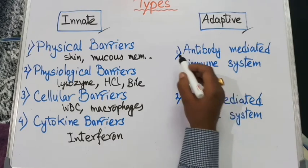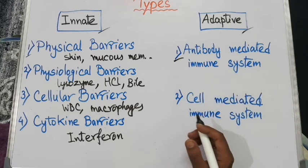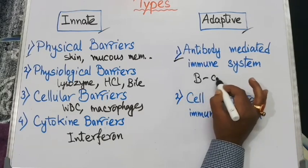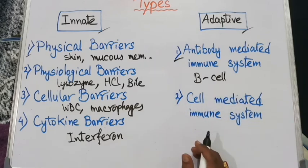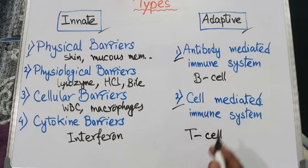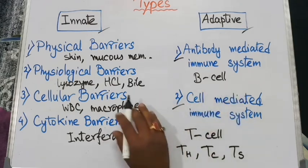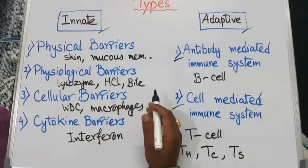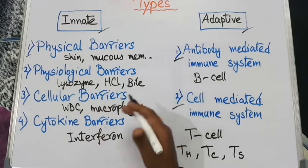Now let's know the components of the adaptive immune system. The first component is antibody-mediated immunity, also known as humoral immunity, which is mediated by B cells or B lymphocytes — they produce antibodies that help destroy pathogens or antigens. The next component is cell-mediated immunity, which acts with the help of T cells or T lymphocytes, including TH, TC, and TS types. These components never act independently but coordinately to fight against pathogens.